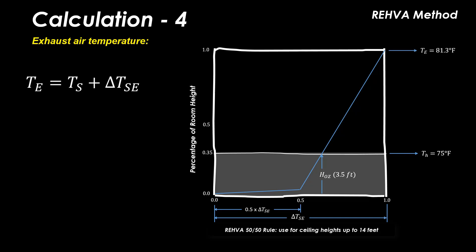The exhaust air temperature TE is calculated by simply adding the supply air temperature to the delta TSE calculated in the previous step. So 62 plus 19.3 results in 81.3°F.